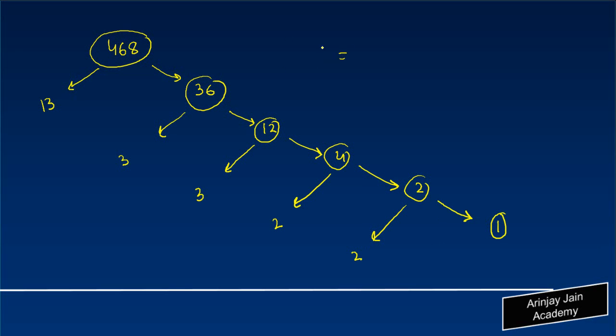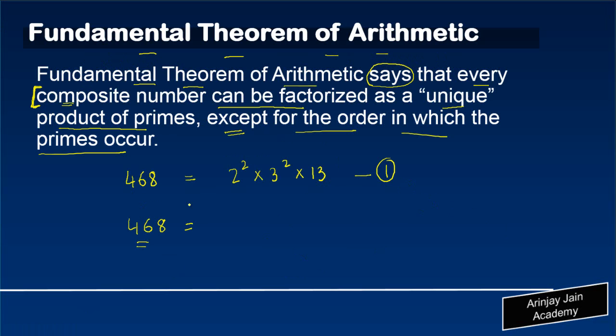So this time, again, 468 can be written as 13 times 3 squared times 2 squared. Let's put this value in the original equation: 13 × 3² × 2².